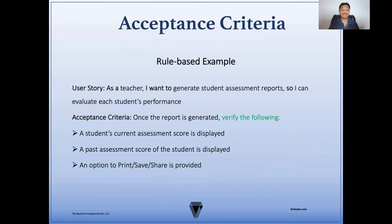Here's an example of rule-based acceptance criteria. For the user story 'as a teacher, I want to generate student assessment reports so that I can evaluate each student's performance,' the acceptance criteria might be: once the report is generated, verify the following — verify a student's current assessment score is displayed; verify that a past assessment score of the student is displayed; and verify that an option to print, save, or share is provided.